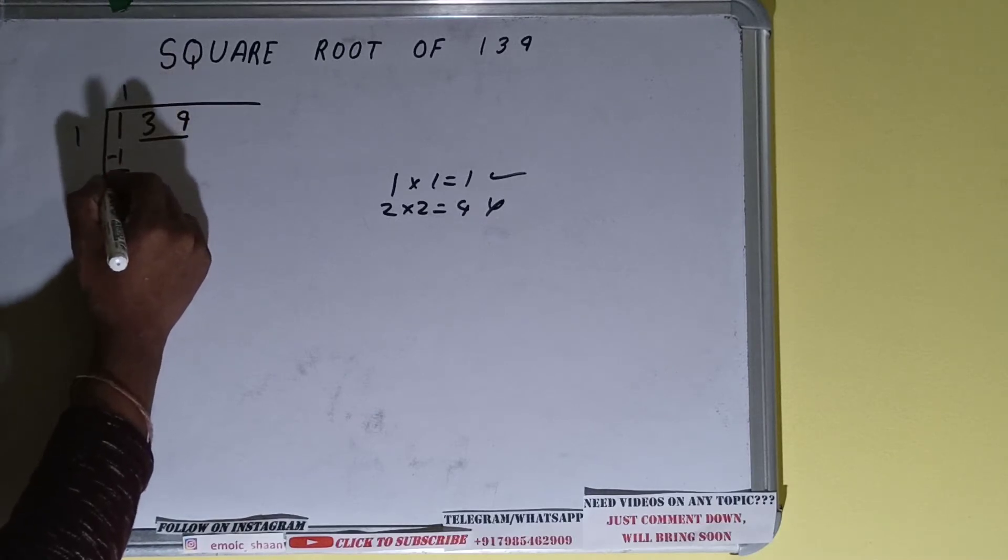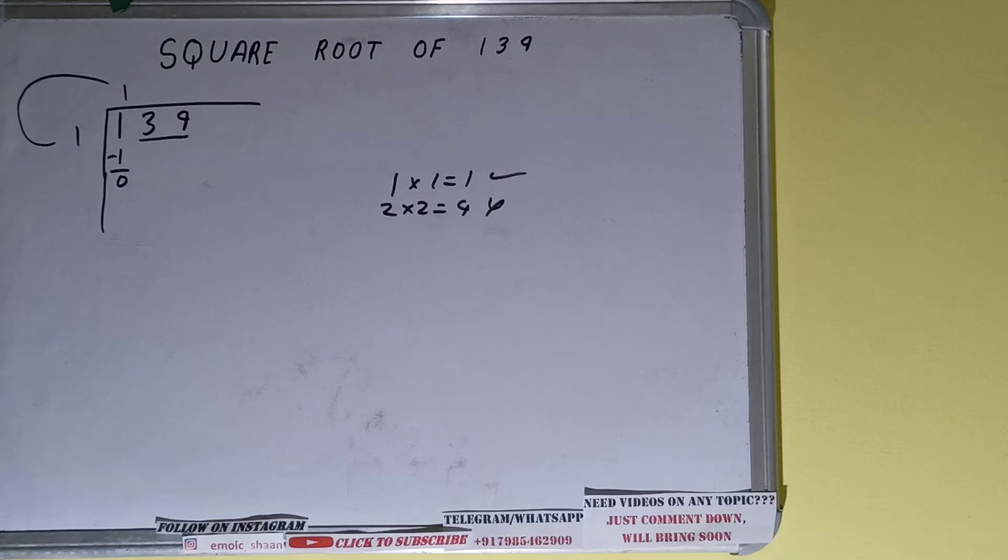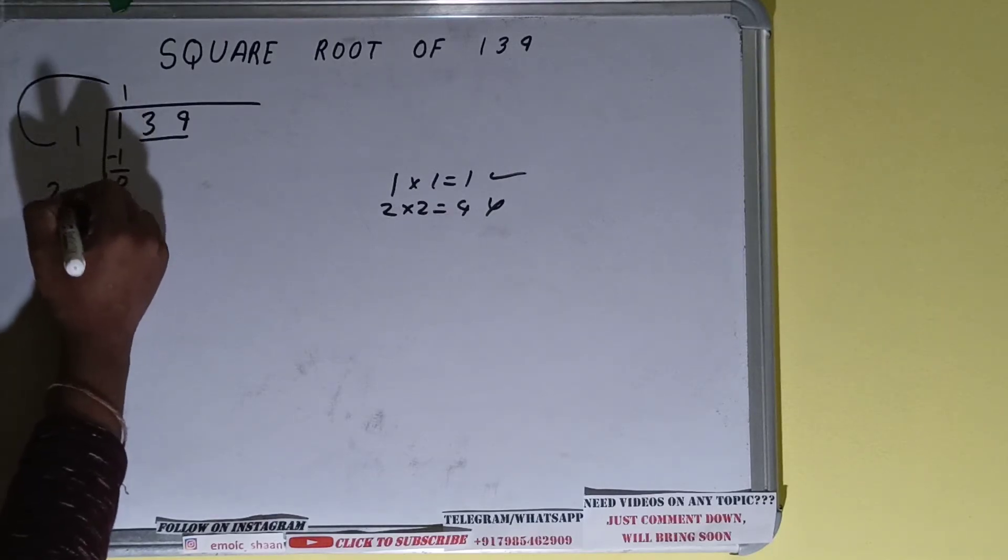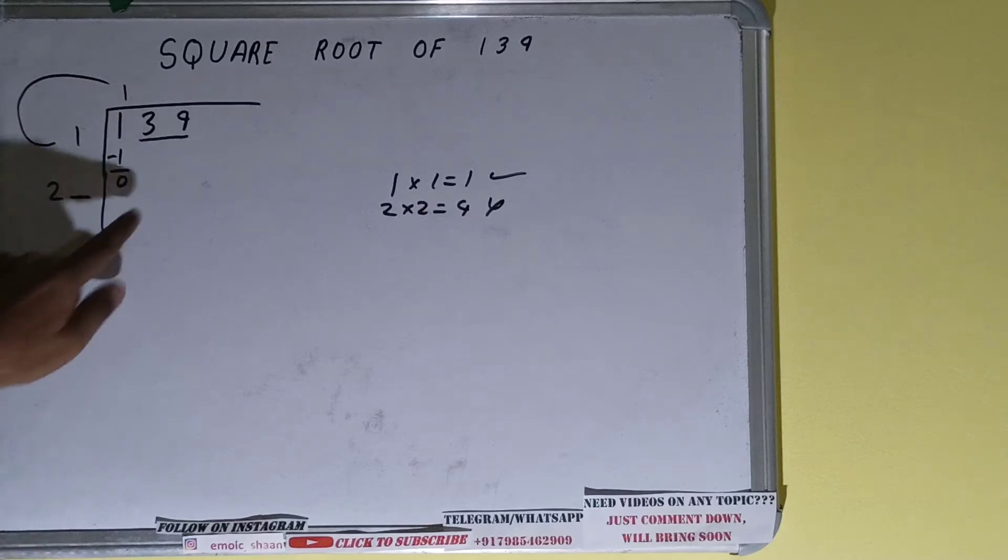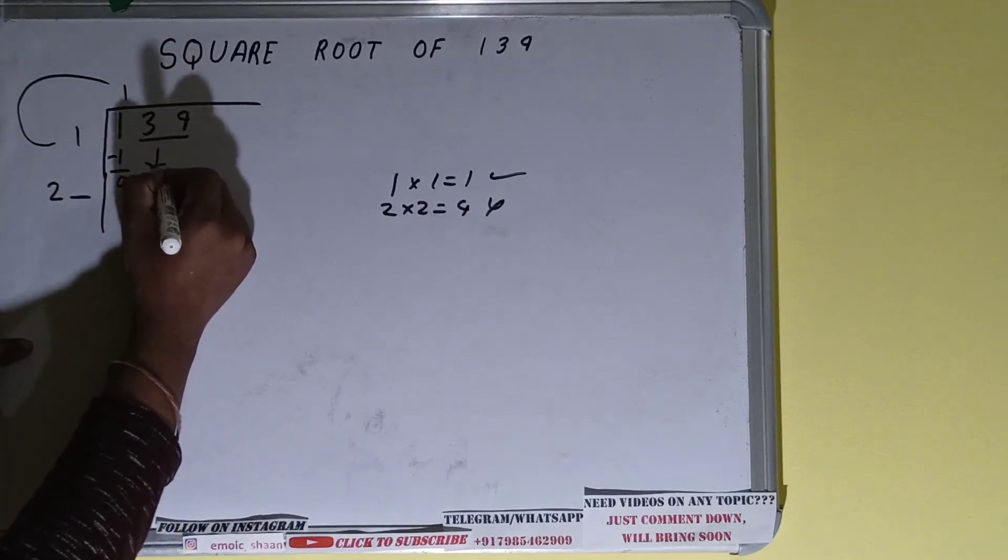Subtract it, left with zero. Now whatever is your divisor, add it with what you multiplied with. We did one into one, so one plus one will be two, and keep one digit extra. We need to make this number bigger, so bring the next pair down, it will be 39.